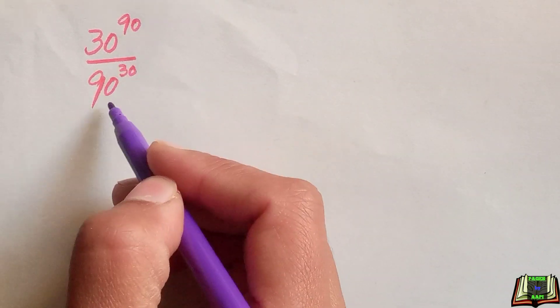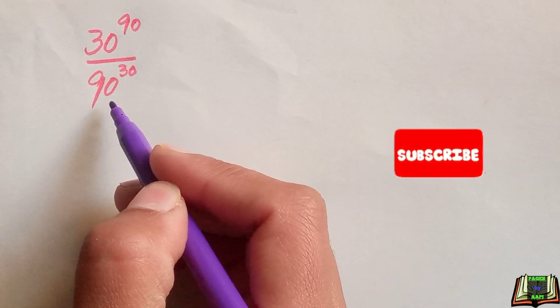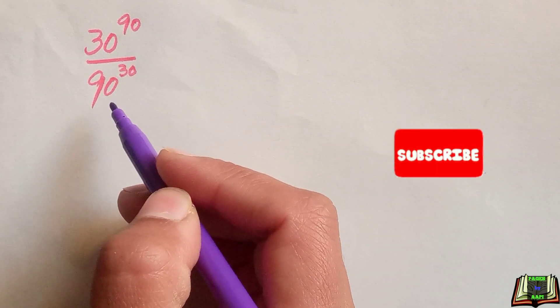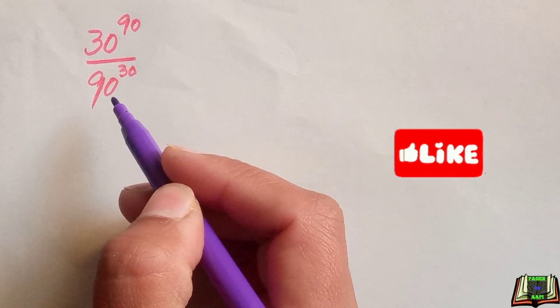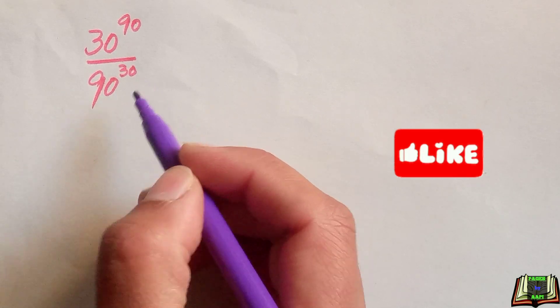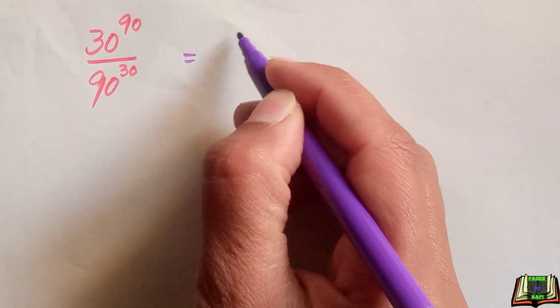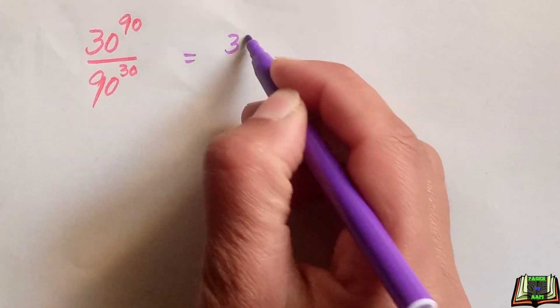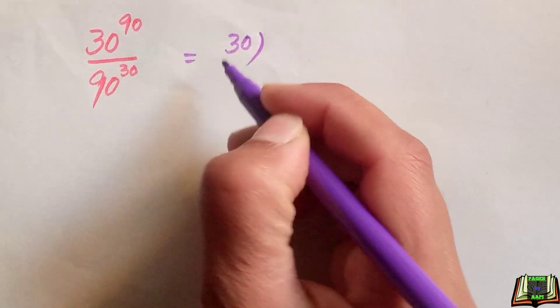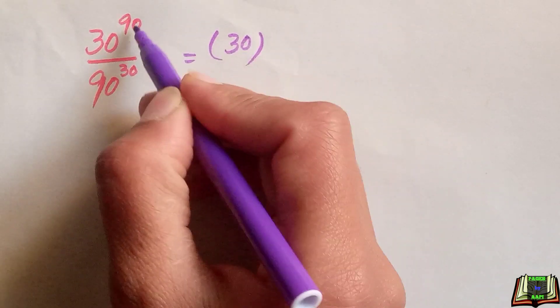Welcome everyone. Today we have a beautiful exponential problem: 30 raised to the power 90, divided by 90 raised to power 30. Let's get started and see how we can find the value of it.